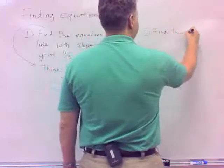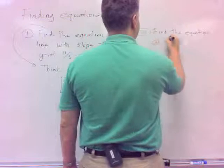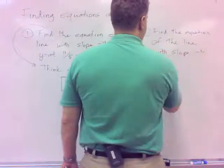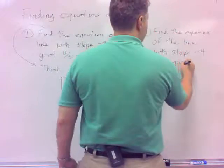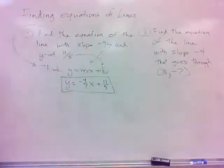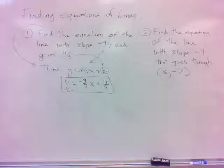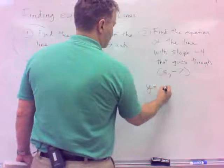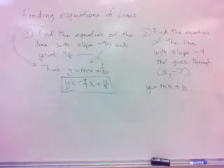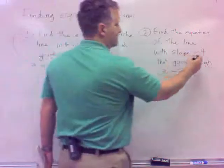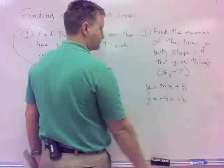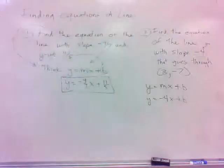Number two. Find the equation of the line with slope negative 4 that goes through 3, negative 7. Well, in this particular case, if I'm thinking y equals mx plus b, I'm in pretty good shape, not quite as good as before. What do I know? I know m. Here's my m. It's my slope. So that goes in for m there. Well, that leaves b.